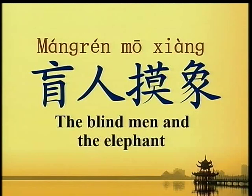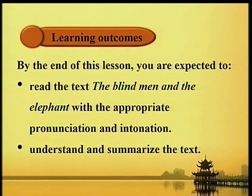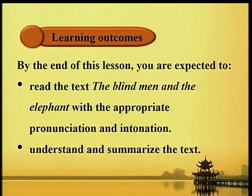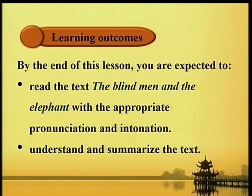盲人摸象 The Blind Man and the Elephant. Learning Outcomes: By the end of this lesson, you are expected to read the text 'The Blind Man and the Elephant' with appropriate pronunciation and intonation, understand and summarize the text.